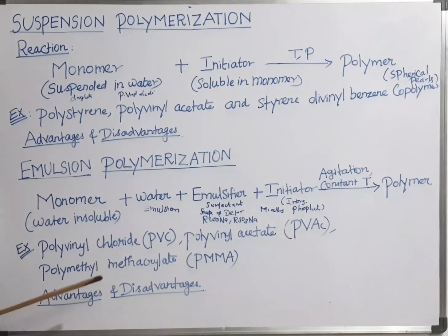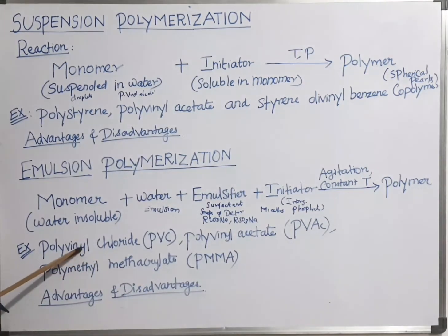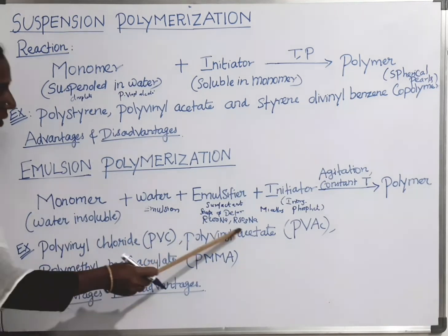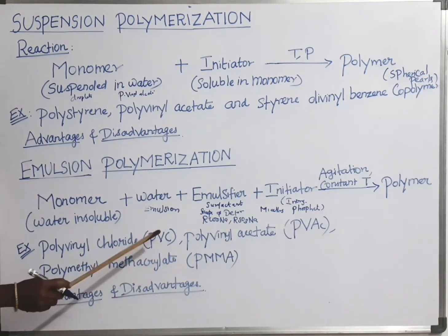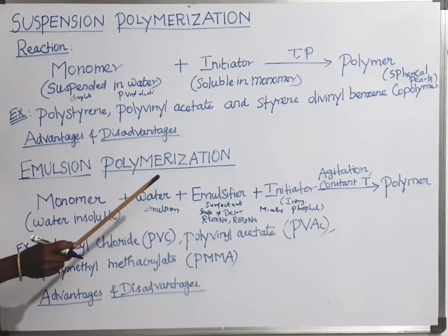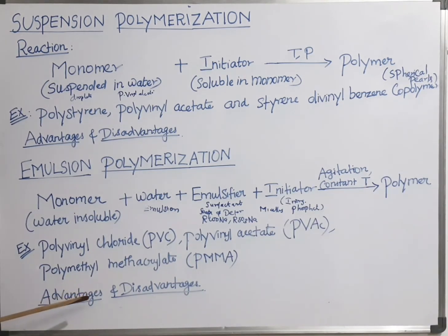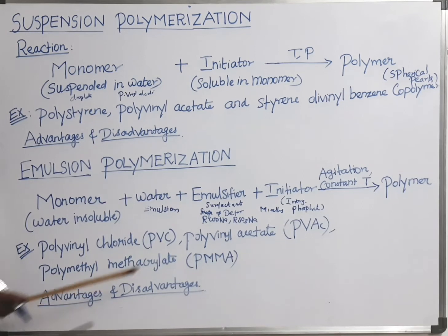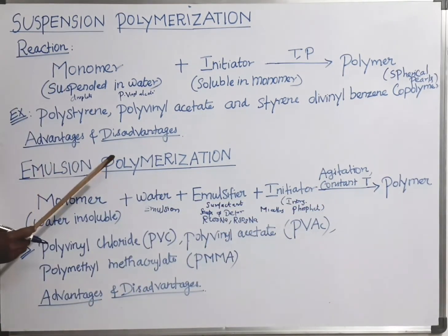Examples of emulsion polymerization include polyvinyl chloride, polyvinyl acetate, and polymethyl methacrylate. A key advantage is that high molecular mass polymer is obtained in this technique.